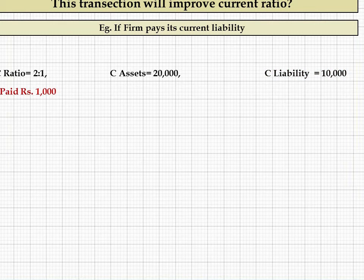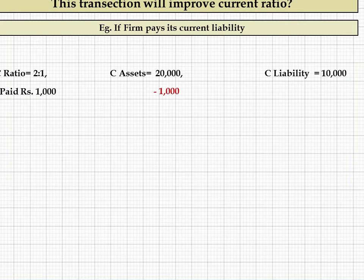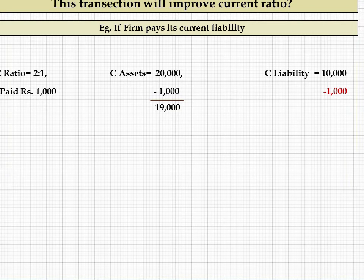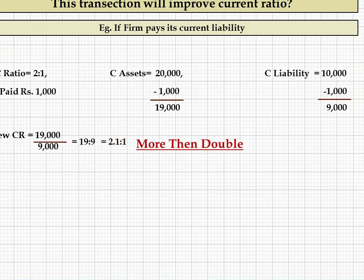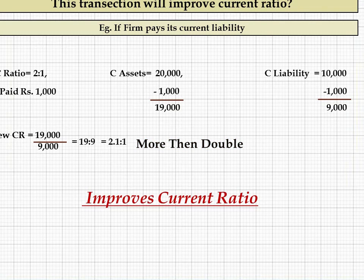Suppose creditors are paid 1,000 rupees. Previously current assets were 20,000; cash of 1,000 is paid out, so current assets become 19,000. Creditors are reduced by 1,000, so current liabilities become 9,000. The new ratio is 19,000 upon 9,000, which is approximately 2.1:1 — more than double. So when any payment is made to current liabilities, it improves the current ratio.